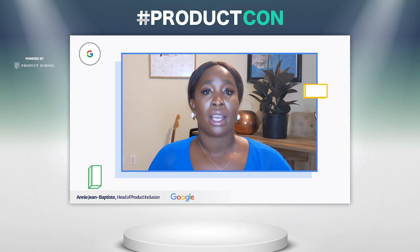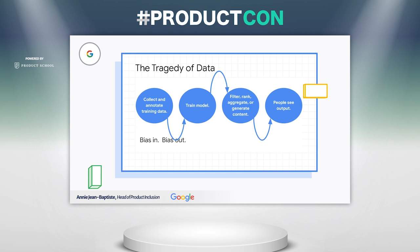All of these things are within me, and they affect how I move through the world. It affects how the world receives me, and it definitely affects how I leverage products. It's really important to think holistically about all of our users. The tragedy of data means that if we don't have an inclusive input, then we won't have an inclusive output. Technology can have bias if we're not intentional about bringing an inclusive lens throughout the entire product design process.